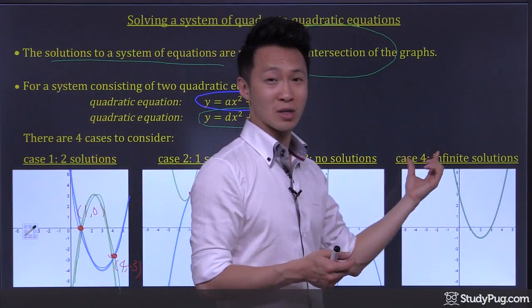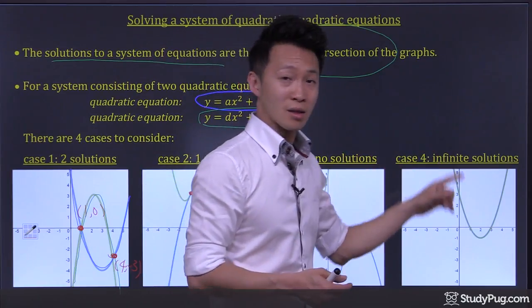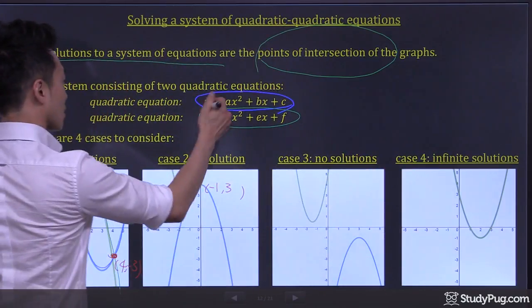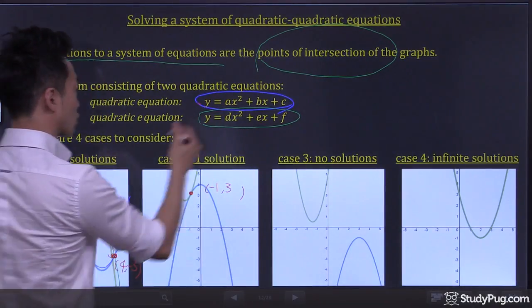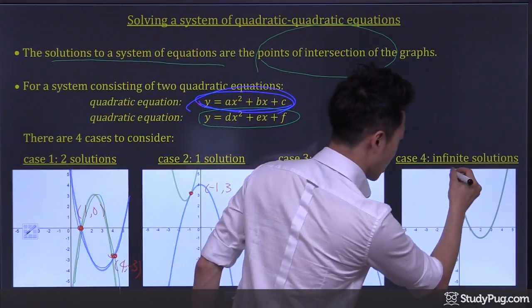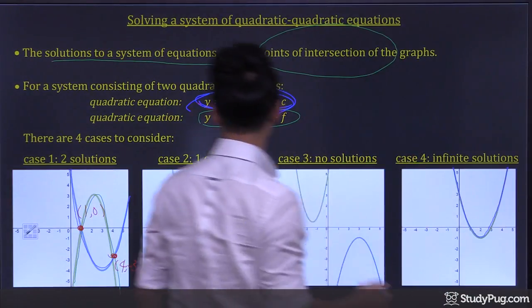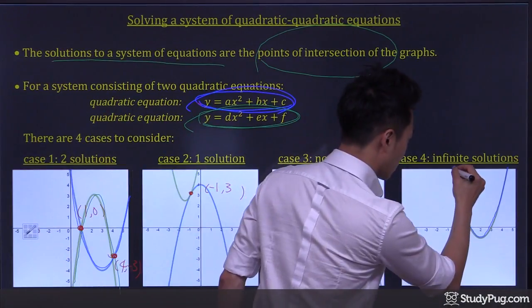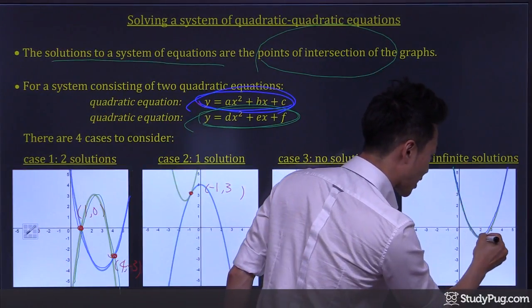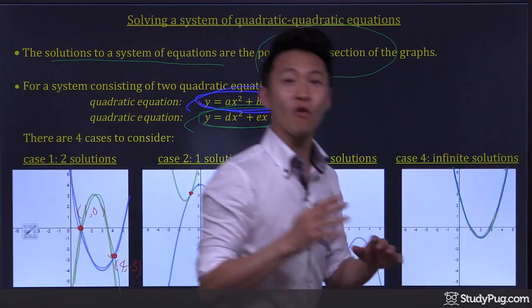Case number four is interesting. You can have the first quadratic equation that looks like this, and the second quadratic equation that goes like this as well, and they completely overlap.